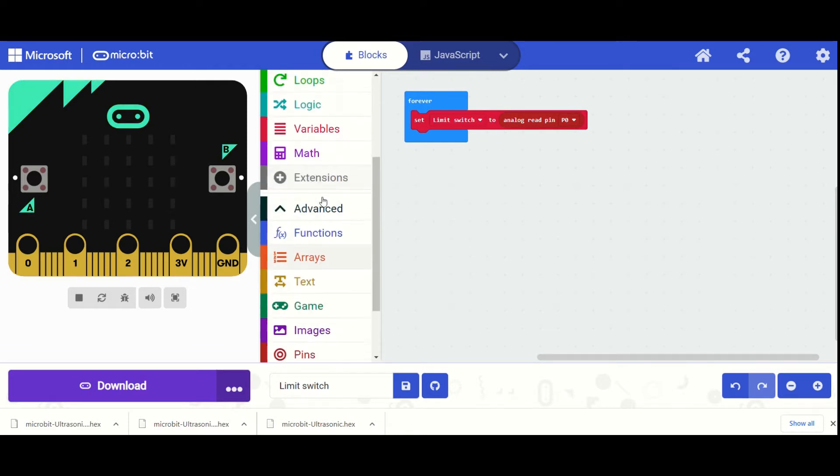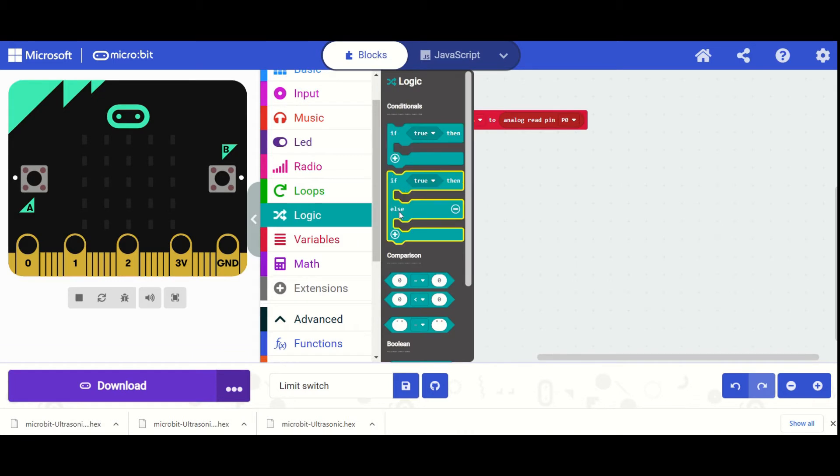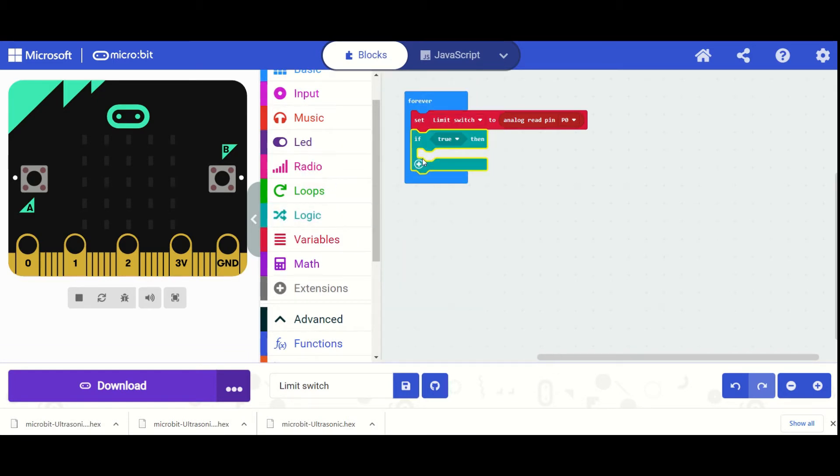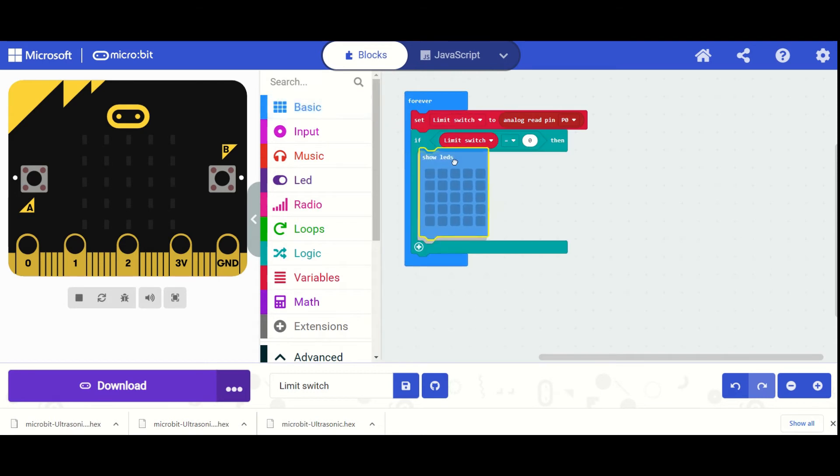Then what we want to do is we want to use our logic so that we can use our limit switch. We're going to change this true block here by going back into logic again and getting a comparison block and dropping that in, getting our variables again and dropping a limit switch. So if limit switch is equal to zero, then something will happen. Now the limit switch should only be equal to zero—so basically what's coming back from it—if it is pressed. Okay, so if we've pressed down, and that's the way we have it wired. So what I'm going to say is, I'm going to say that for us to know that, we are going to say that the LEDs show an X.